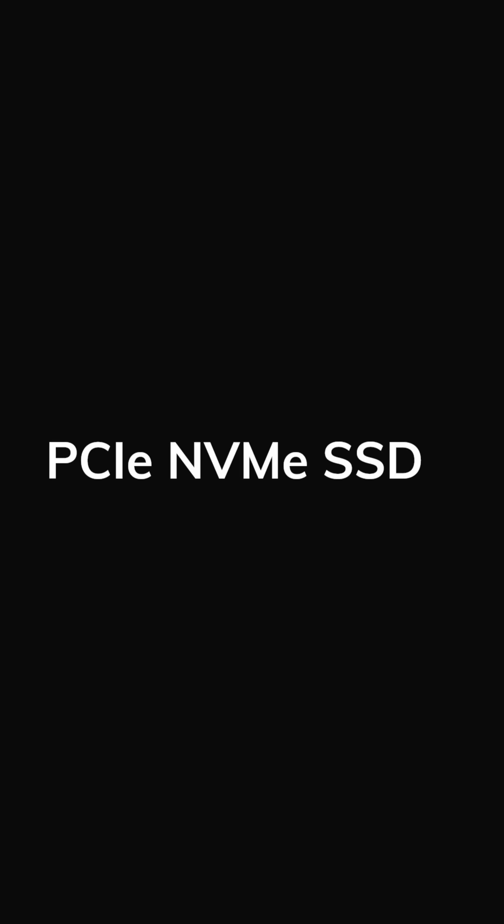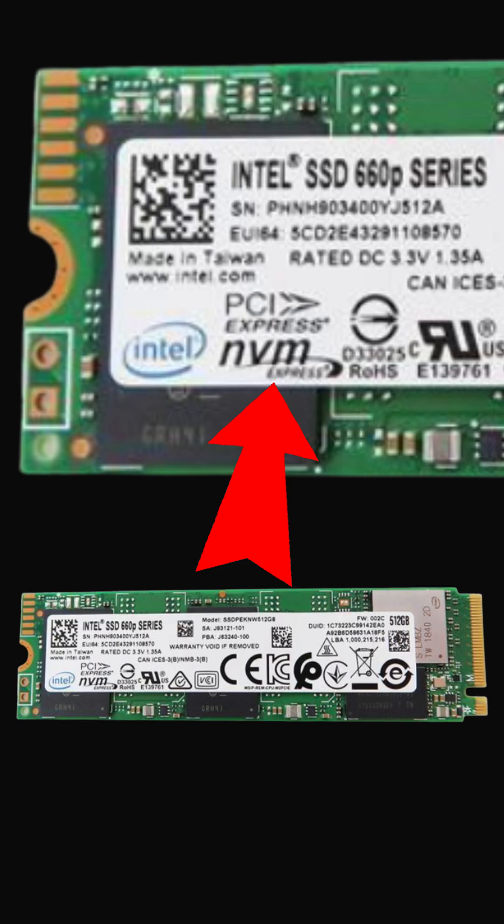The third type is the PCIe NVMe SSD. This is the fastest type of SSD, using a PCIe connector and interface, allowing for extremely fast data transfer speeds of up to 10 GB per second.